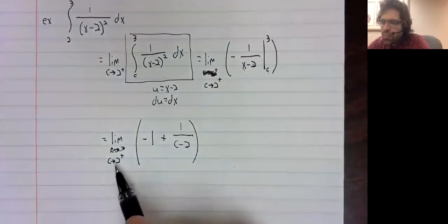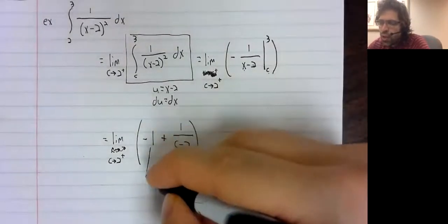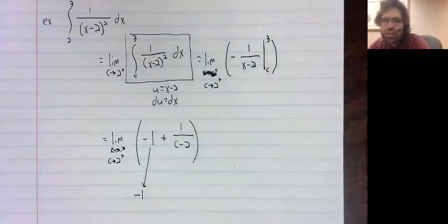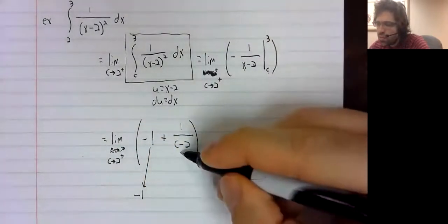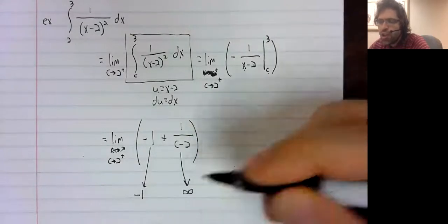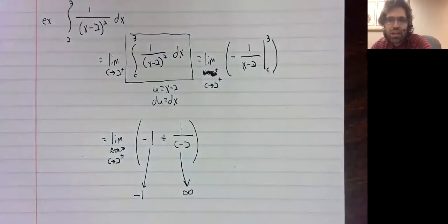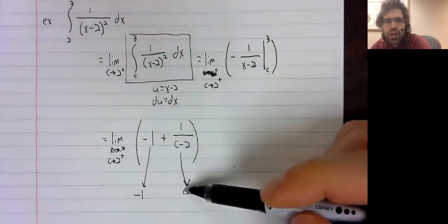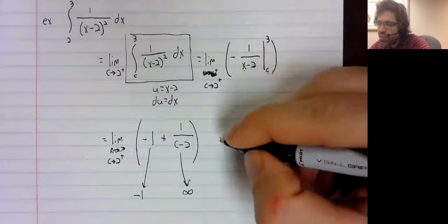And as C approaches two, well, negative one is just a constant, but this is going to infinity. And negative one plus infinity is infinity.